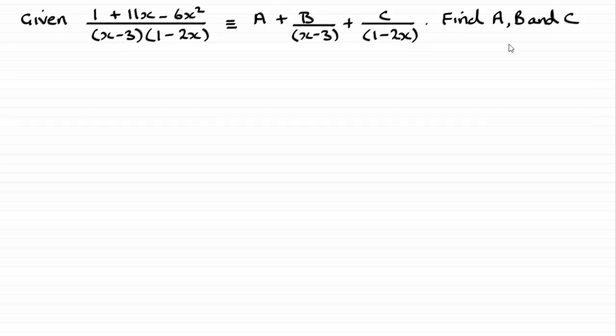Well, what we could do is multiply both sides by this denominator here, x minus 3, 1 minus 2x. And if we do that, we're therefore going to have, on the left, 1 plus 11x minus 6x squared.